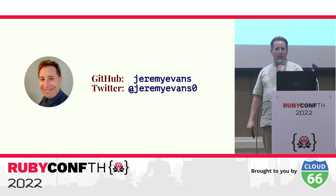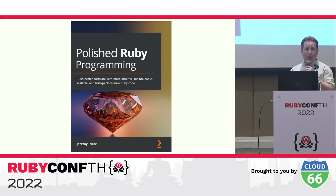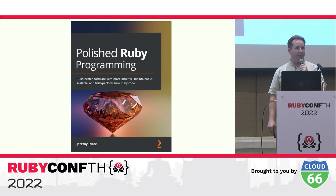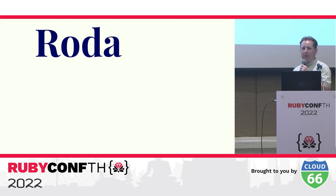My name is Jeremy Evans. I'm a Ruby committer who focuses on fixing bugs in Ruby. I'm also the author of Polished Ruby Programming, which was published last year. This book is aimed at intermediate Ruby programmers and focuses on teaching the principles of Ruby programming as well as trade-offs to consider when making implementation decisions.